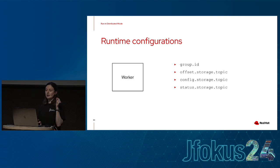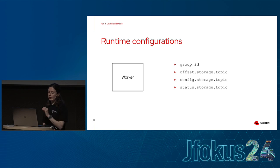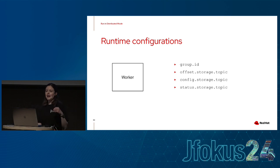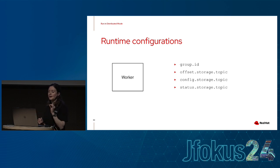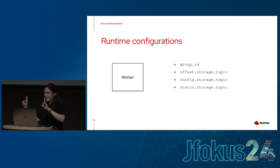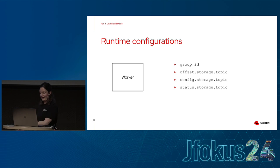There are four things to check when running in distributed mode. First, the group ID — every worker must have the same group ID to be part of the same Connect cluster. Then there are three topic configurations: an offset topic, a config topic, and a status topic, which Connect uses to store state. Make sure all workers in your cluster use the same topics for each, and crucially, if you're running more than one Kafka Connect cluster against the same Kafka cluster, they need to use different topics.